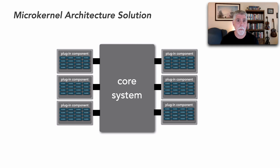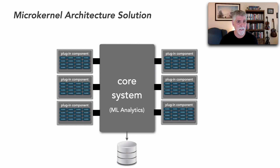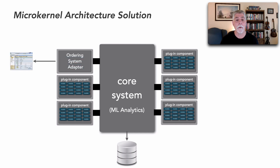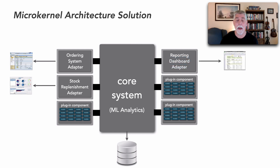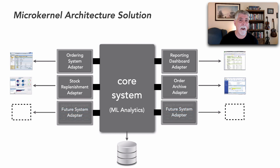The core system is where all the code resides — it can contain all of the machine learning code for analytics and algorithms, and also interact with a fairly large-scale database given the large volume of information. Each plug-in in the microkernel architecture acts as an adapter. For example, the ordering system adapter extracts orders to do analysis on, and another adapter communicates with the stock replenishment system once we have information about how much stock to order. We can also add a plug-in for the reporting dashboard and one for the order archive system.